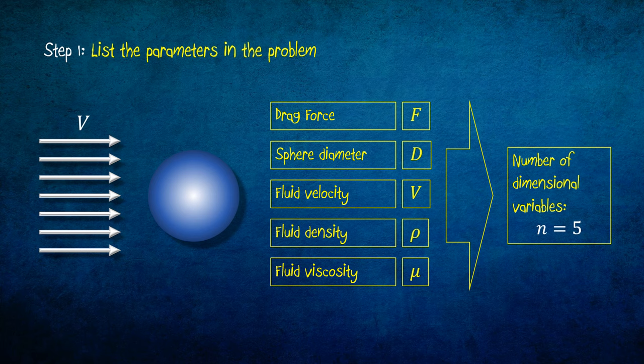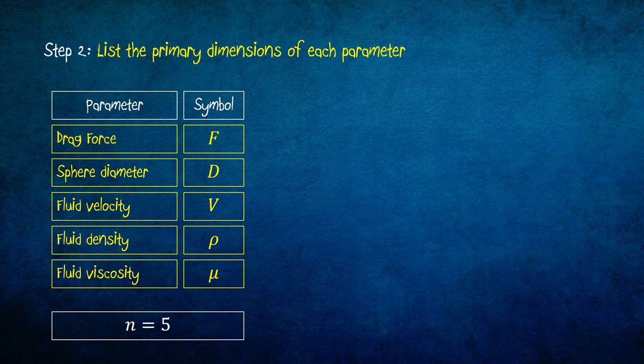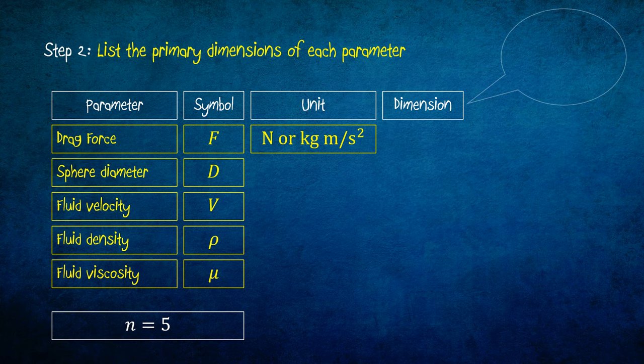Step 2 consists of listing the primary dimensions of each parameter. To obtain the dimension of a parameter, sometimes it is easier to start by obtaining its unit. From the unit, the translation to the dimension can be easily done. The unit for drag force is newton, or kilograms meter per second squared. If m represents the dimension for mass, l for length, and t for time, then the dimension for the drag force is mLt power negative 2.